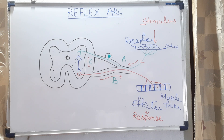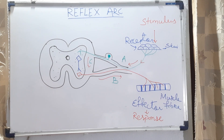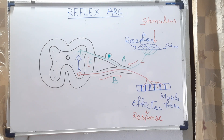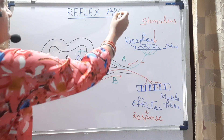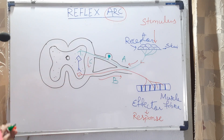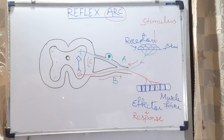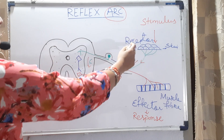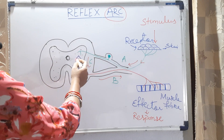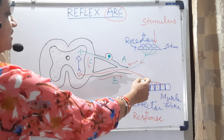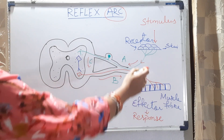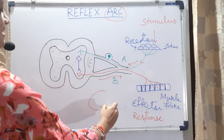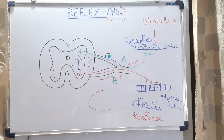How to represent the reflex arc schematically? Do you know what is the meaning of arc? Arc means part of a circle. If we draw the diagram of a semicircle, we can say starting from stimulus, receptor, sensory neuron, connector neuron, motor neuron, then effector, and response. It comes as if the alphabet C, so it is called an arc.